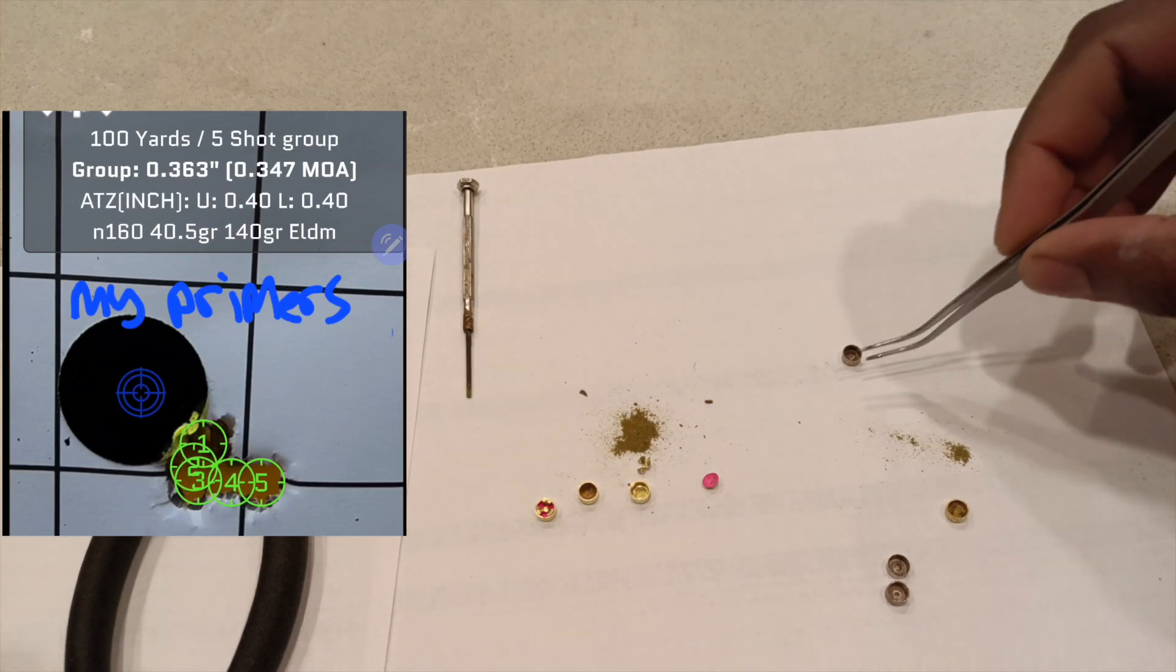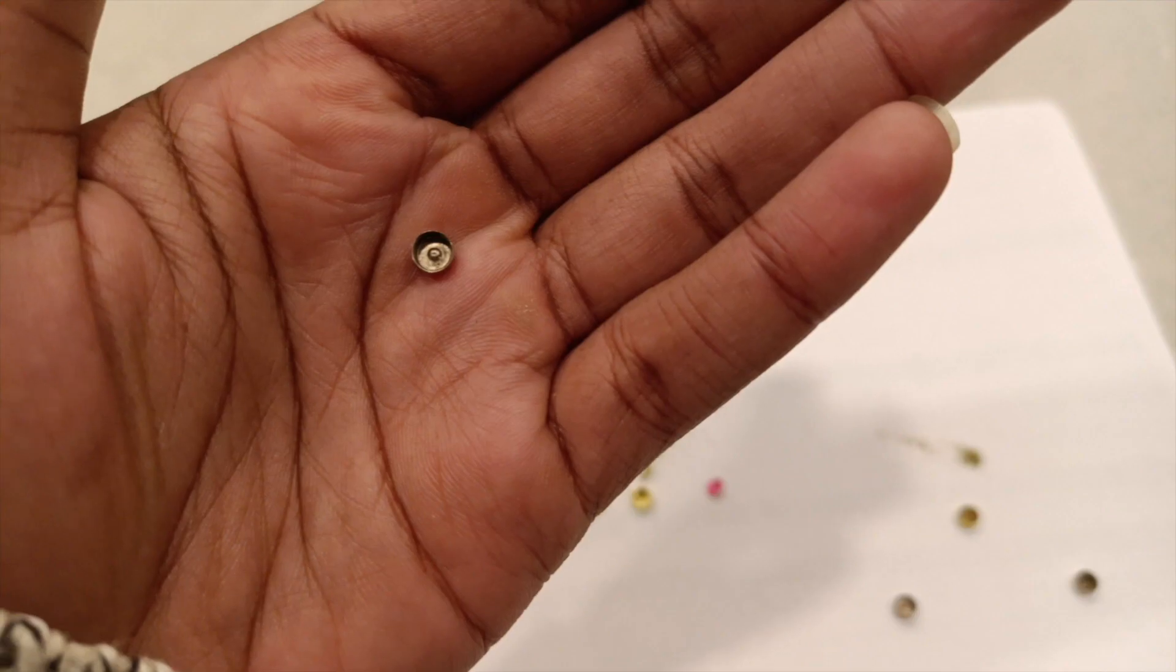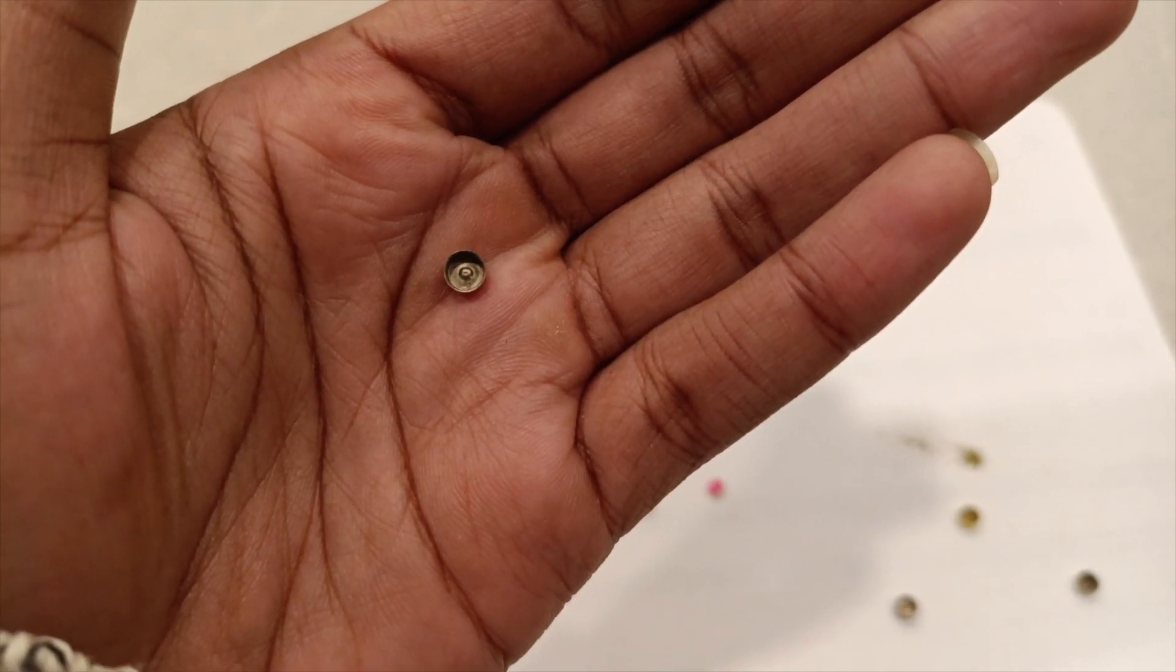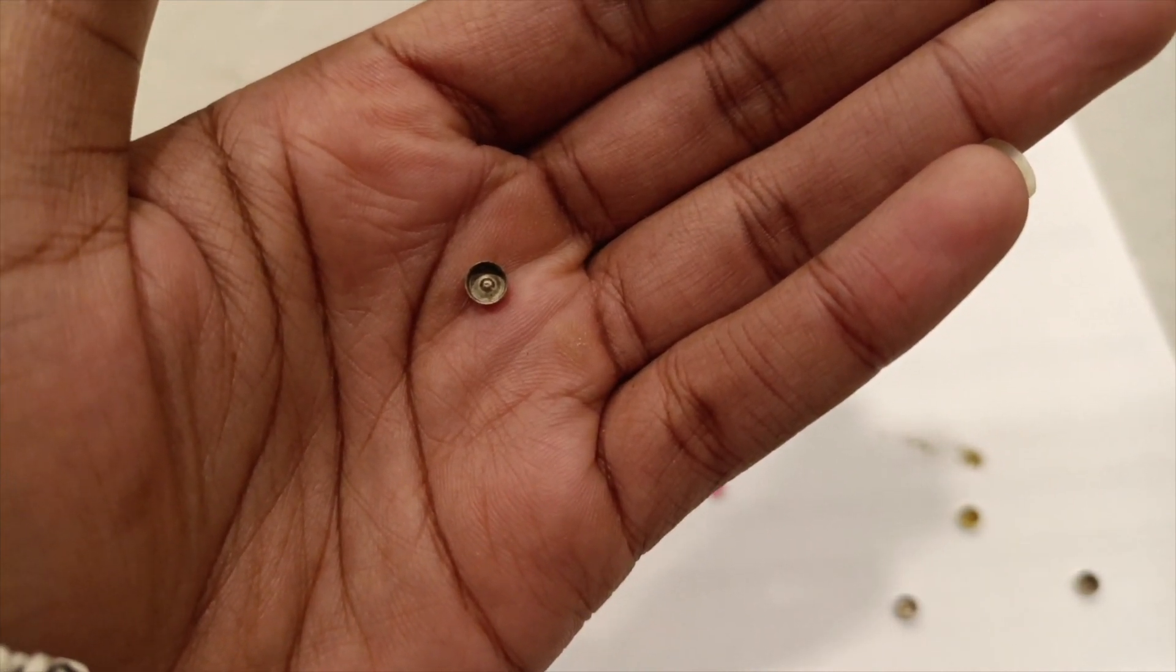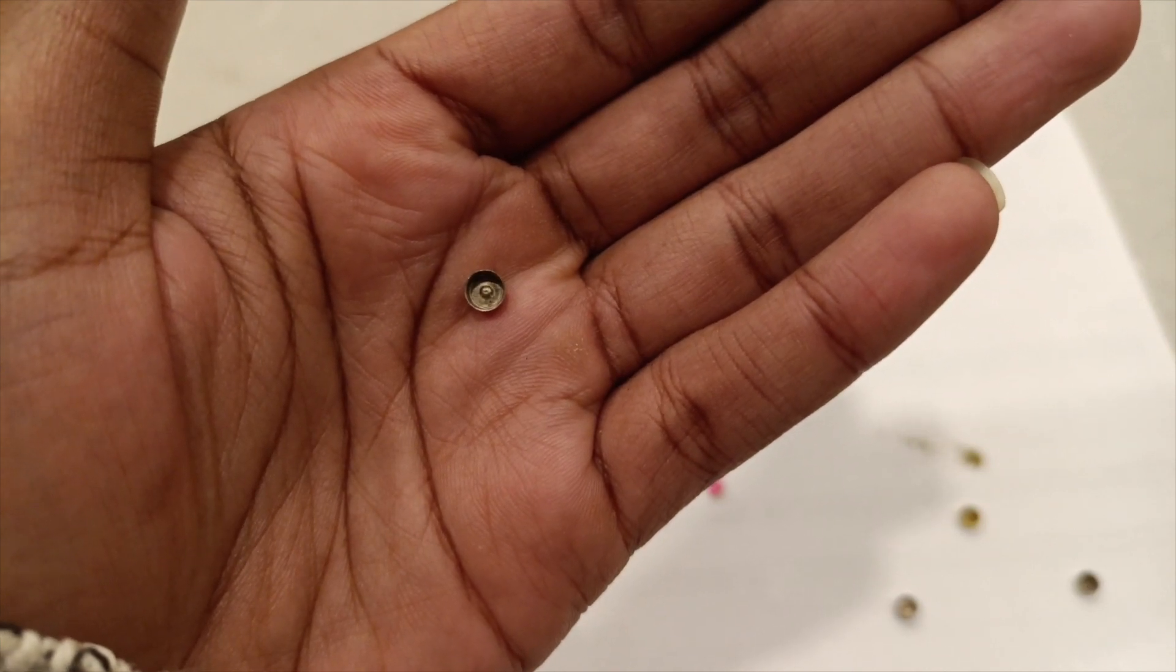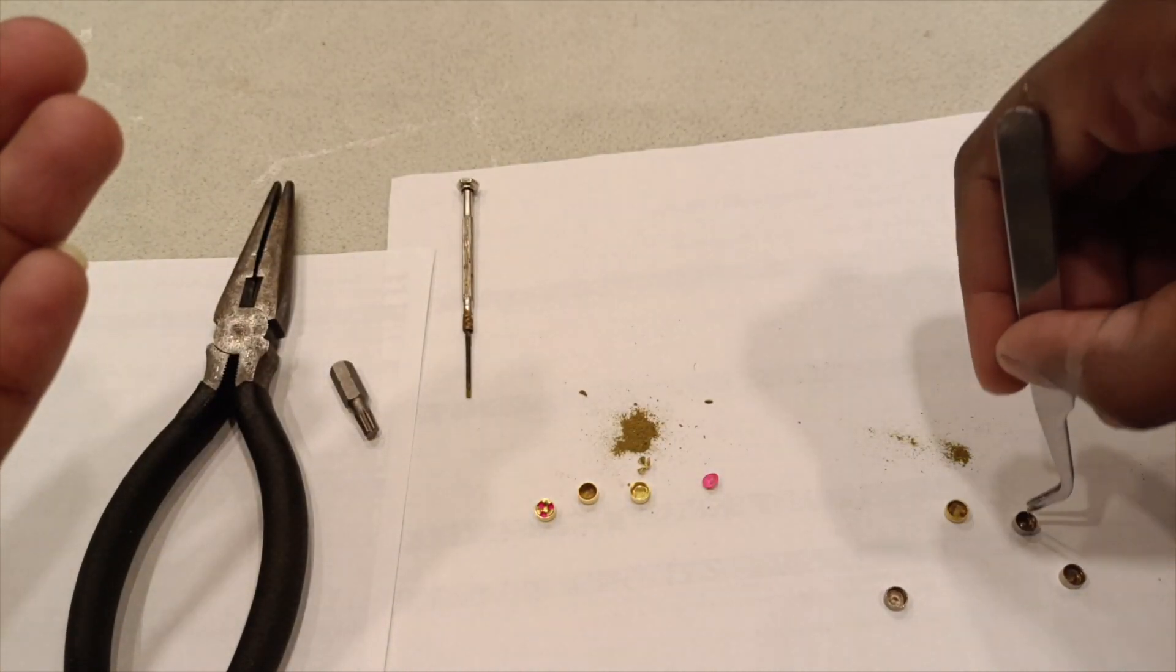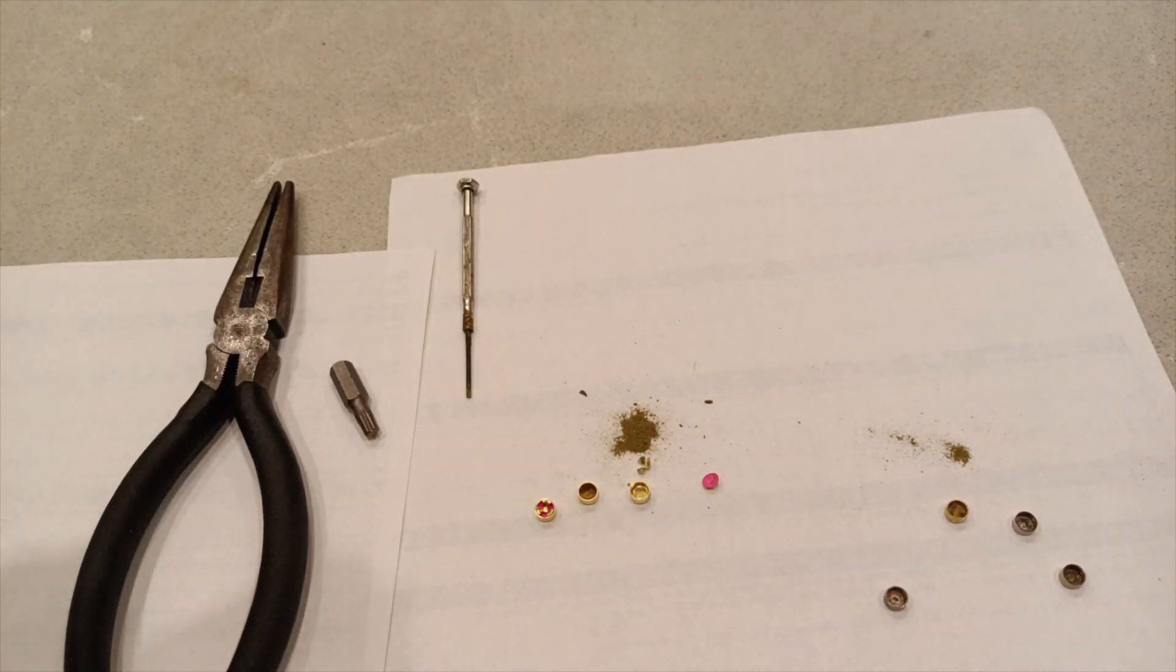So when you take a primer from your case, this is what it's going to look like. This is what the primer looks like after you take it from a fired case and after you take the envelope. Now you can see there's obviously a very noticeable dent in there and what you want to do is just put that down on the surface. You want to put it underneath a coin so when you punch it out and flatten it, it is not a concave round underneath.